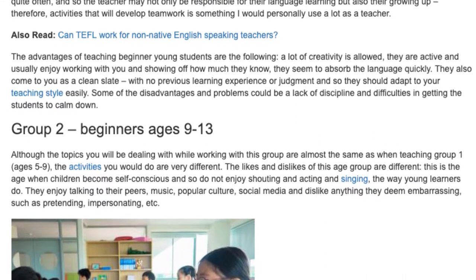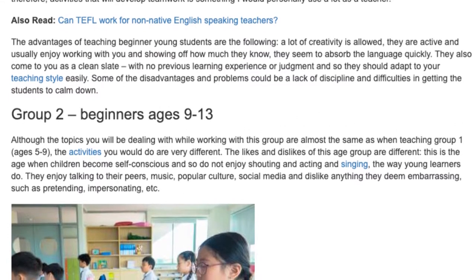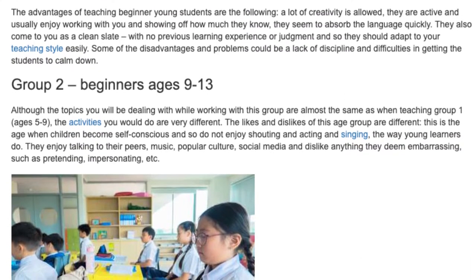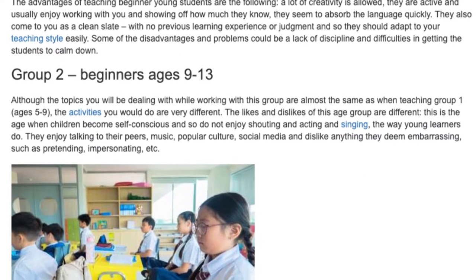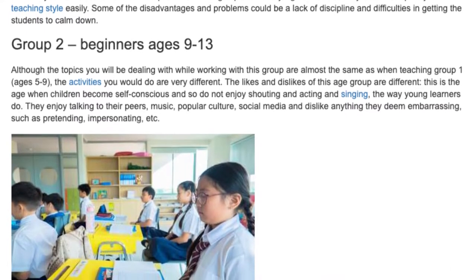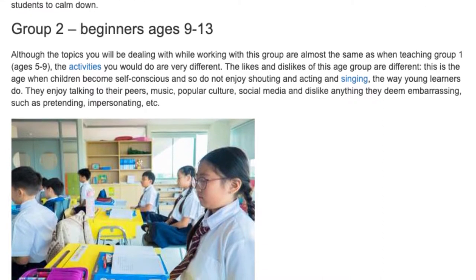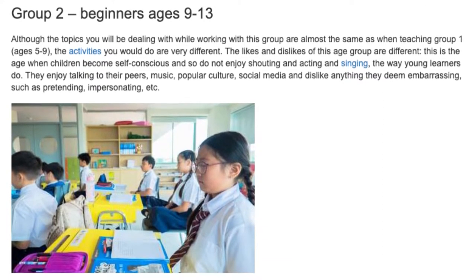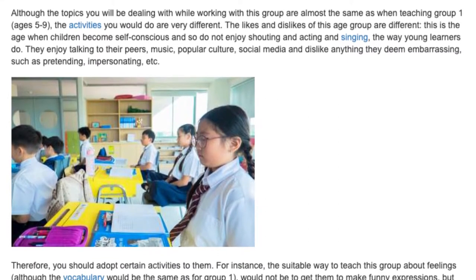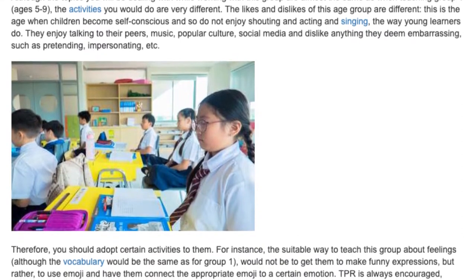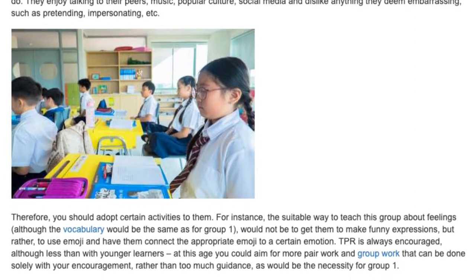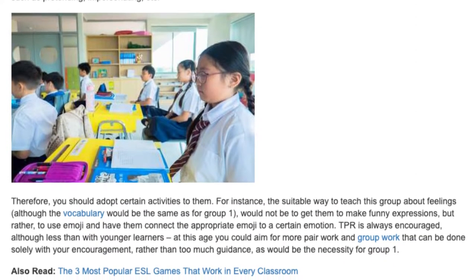Group 2: Beginners Ages 9 to 13. Although the topics you will be dealing with while working with this group are almost the same as when teaching Group 1 (ages 5 to 9), the activities you would do are very different. The likes and dislikes of this age group are different. This is the age when children become self-conscious, and so they do not enjoy shouting, acting, and singing the way young learners do. They enjoy talking to their peers, music, popular culture, and social media, and dislike anything they deem embarrassing, such as pretending or impersonating. Therefore, you should adapt certain activities to them.